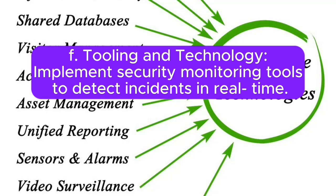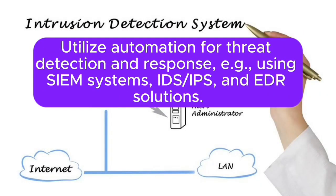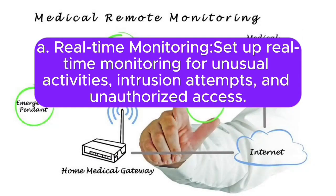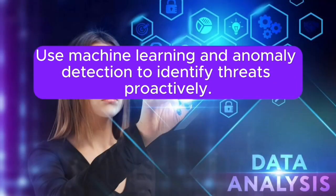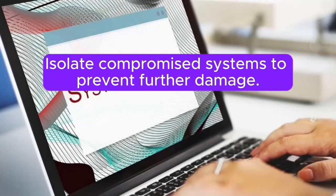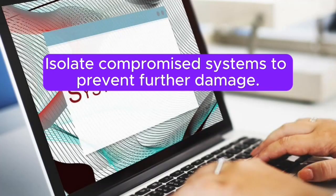F. Tooling and technology: Implement security monitoring tools to detect incidents in real-time. Utilize automation for threat detection and response — for example, using SIEM systems, IDS or IPS, and EDR solutions. 2. Detection and analysis phase. A. Real-time monitoring: Set up real-time monitoring for unusual activities, intrusion attempts, and unauthorized access. Use machine learning and anomaly detection to identify threats proactively. B. Incident identification: When an incident occurs, use automated alerts and manual analysis to determine the nature and scope of the breach. Isolate compromised systems to prevent further damage.